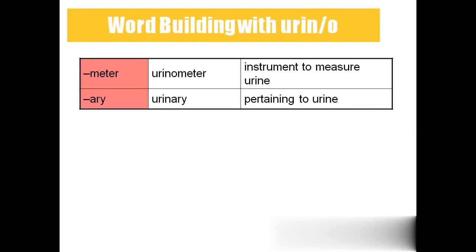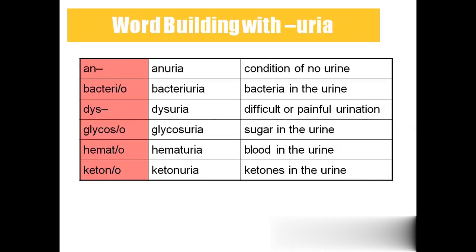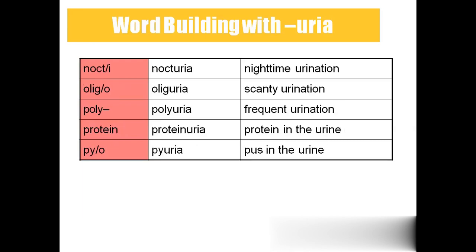Urinometer is an instrument to measure urine — meter means an instrument used to measure. Urinary means pertaining or related to urine. Anuria means a condition of no urine. Bacteriuria means bacteria present in the urine. Dysuria — dis as prefix means difficult or painful urination. Glycosuria means sugar in the urine — usually found in diabetic people. Hematuria means blood in the urine. Ketonuria means ketone bodies in the urine — diabetic people have both ketonuria and glycosuria. Nocturia means nighttime urination. Oliguria means scanty urination. Polyuria means frequent urination. Proteinuria means protein present in the urine. Pyuria — pyo means pus — means pus present in the urine.